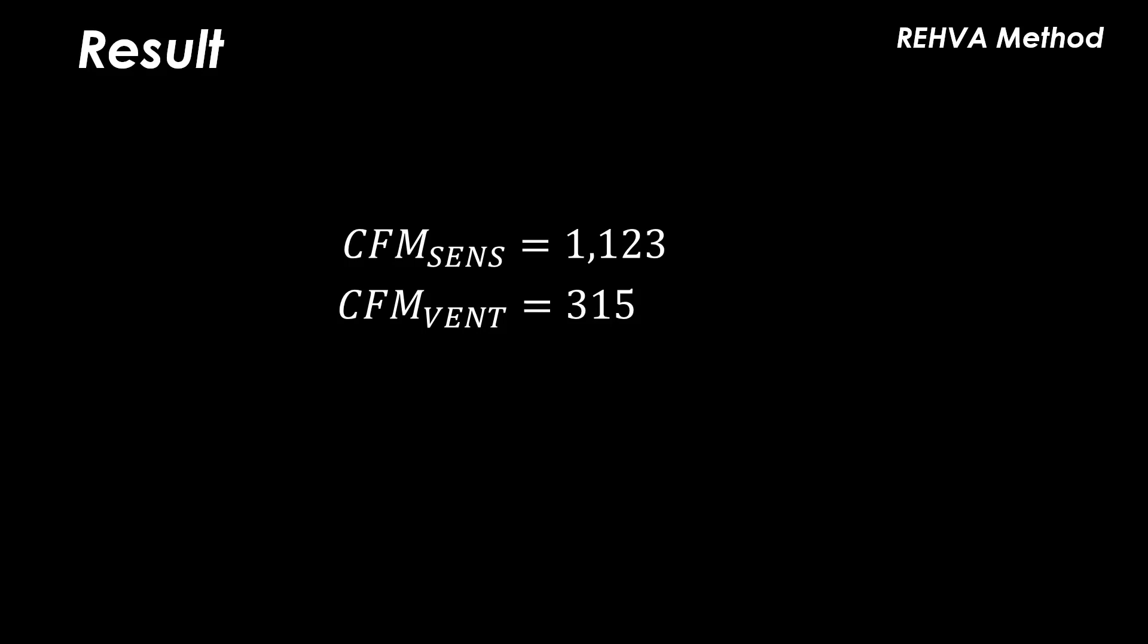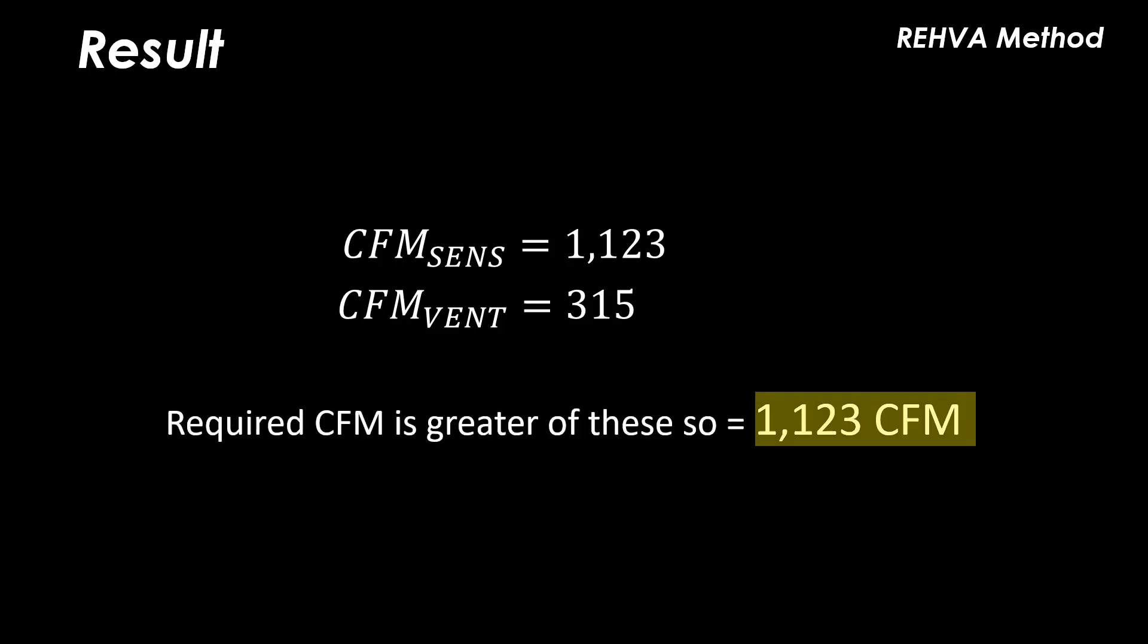Finally, we must check that the airflow required for the sensible cooling is equal to or greater than the airflow required for the ventilation. In part one, we covered the ASHRAE standard 62 calculations for ventilation air, which resulted in 315 CFM for the classroom. The final total CFM required is the greater of the two.